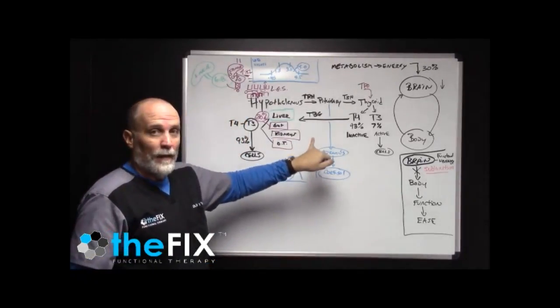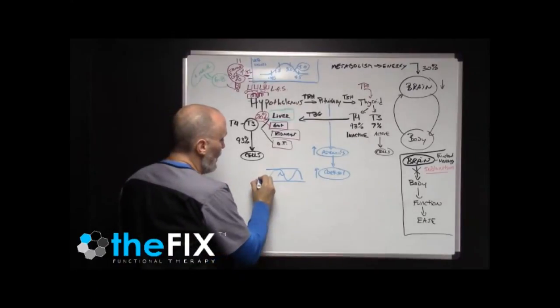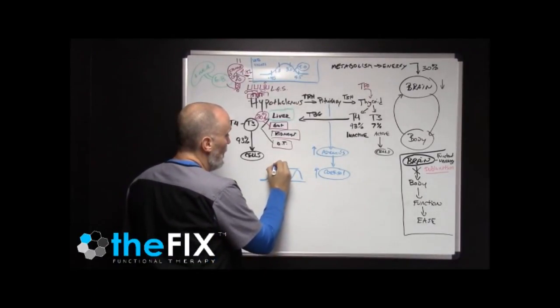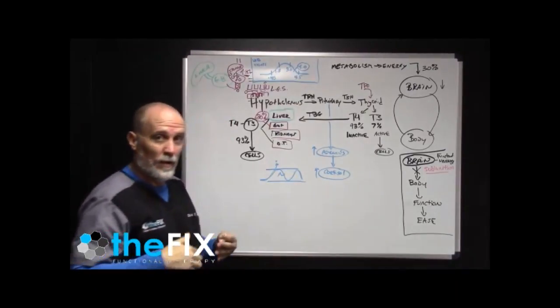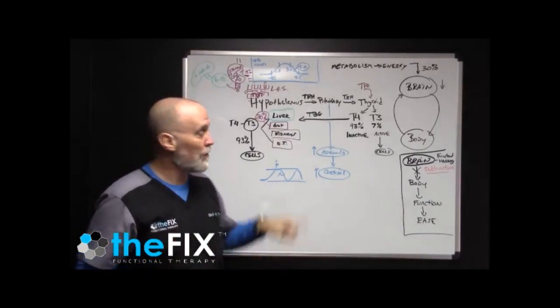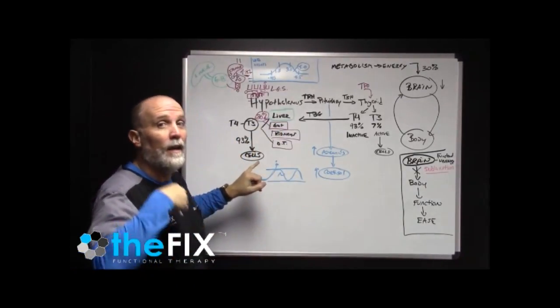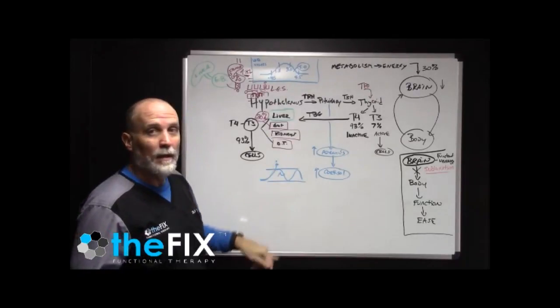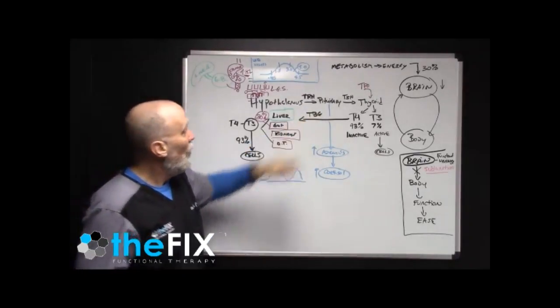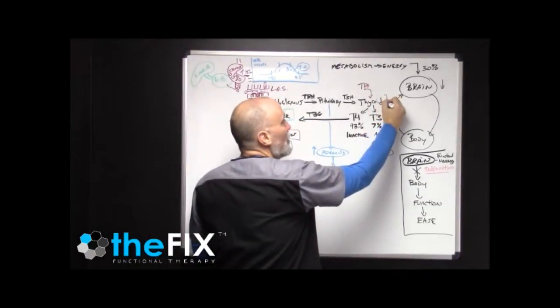If cortisol levels are elevated, blood sugar levels are going to go up because that's what happens when you need that extra fuel to fuel the stress response. So your liver is going to release extra glucagon. You're going to get this blood sugar elevation.